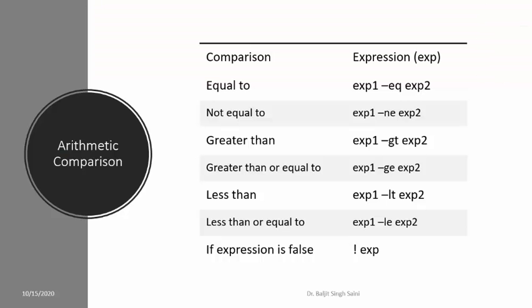To evaluate the condition, one of the common comparisons is arithmetic comparison. This is different from other languages like C or C++ where we simply use the less-than or greater-than sign. Here: for equal to we use -eq, for not equal to we use -ne, for greater than we use -gt, for greater than or equal to we use -ge, for less than we use -lt, and for less than or equal to we use -le.